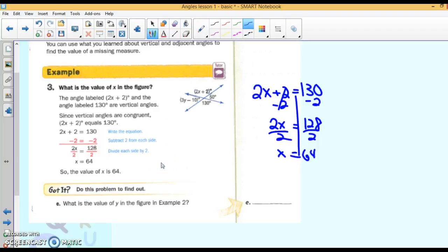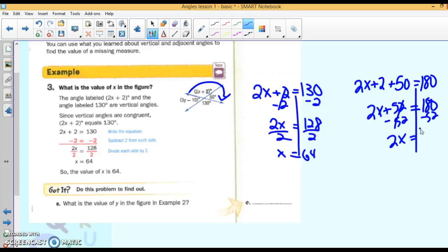Or, I could have looked at this angle relationship. They are a linear pair, which means they're supplementary. They add up to 180. So, I could do 2x plus 2 plus 50 equals 180. Let's solve 2x plus 52 equals 180. Subtract 52. So, 2x is 128. Divide both sides by 2. And I get x is 64. So, you can do whatever angle relationship you want. Write an equation and solve for the appropriate variable.